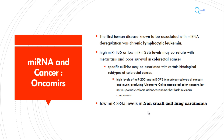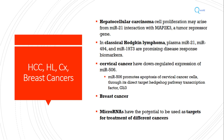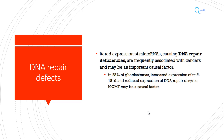miRNA overexpression can be seen in colorectal cancer, while lower levels of micro RNA are seen in some cancers like non-small cell lung carcinoma, hepatocellular carcinoma, Hodgkin's lymphoma, cervical cancer, breast cancer, and many others — all involving micro RNA level modification. That is why micro RNAs have the potential to be used as targets for treatment of different cancers using gene therapy.